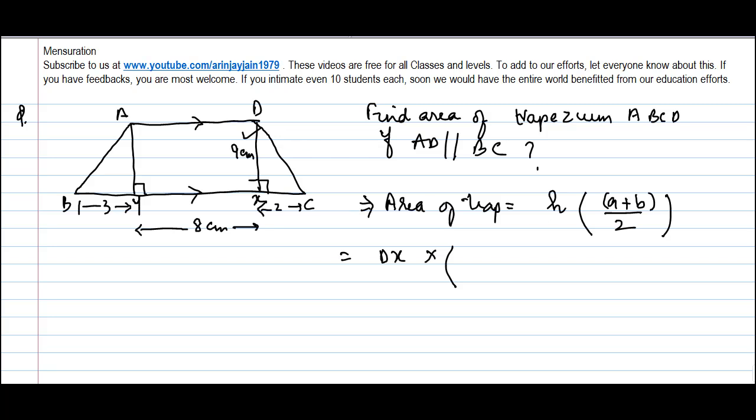Now, let's say this point is called Y. So we know that AYXD is a rectangle. Right?